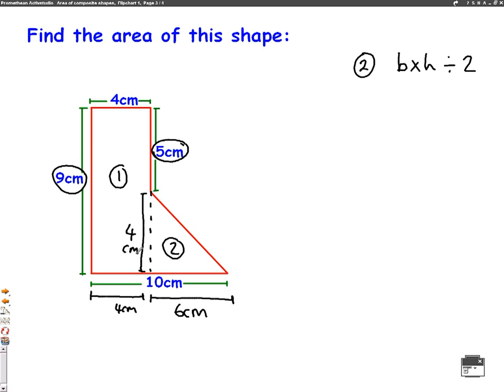So the area of part number 2 is 6 times 4 divided by 2. 6 times 4 is 24 divided by 2, which is 12 centimetres squared.